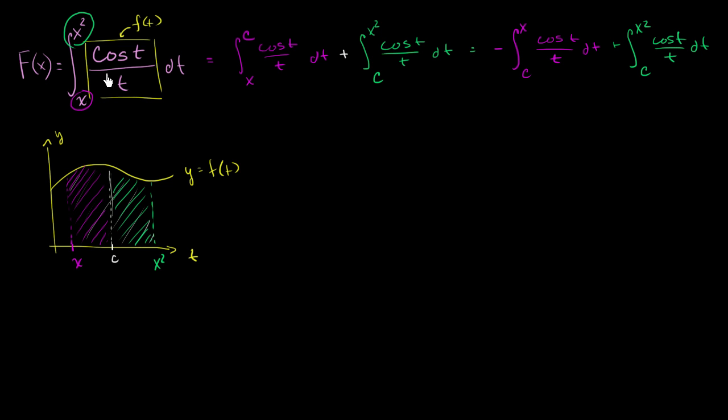So all we've done is we've rewritten this thing in a way that we're used to applying the fundamental theorem of calculus. So if we want to find F prime of x, well, applying the derivative operator over here, we're going to have a negative out front. It's going to be equal to negative cosine x over x. Once again, just the fundamental theorem of calculus.